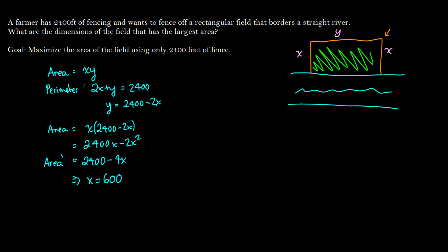So f prime of 600 is equal to zero. Now this is something you should remember from curve sketching that this is a critical point. And what do we know about critical points? They are either maximums or minimums. So what we want to do is we want to maximize the area of the field. So we need to check to see, hey, is this actually a maximum? And the answer is, well, it should be.